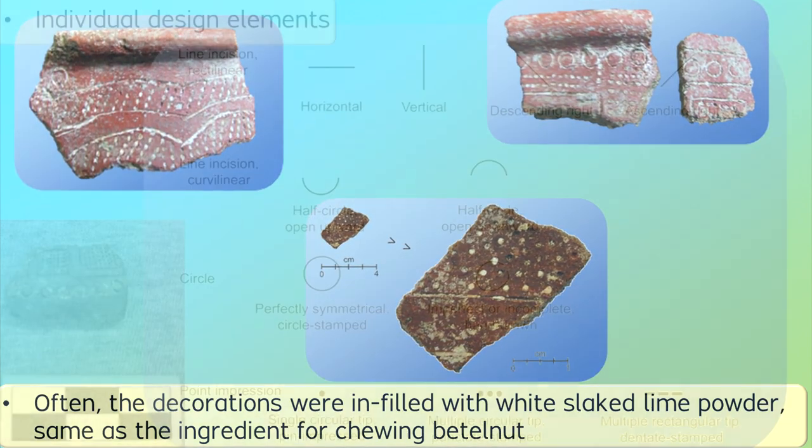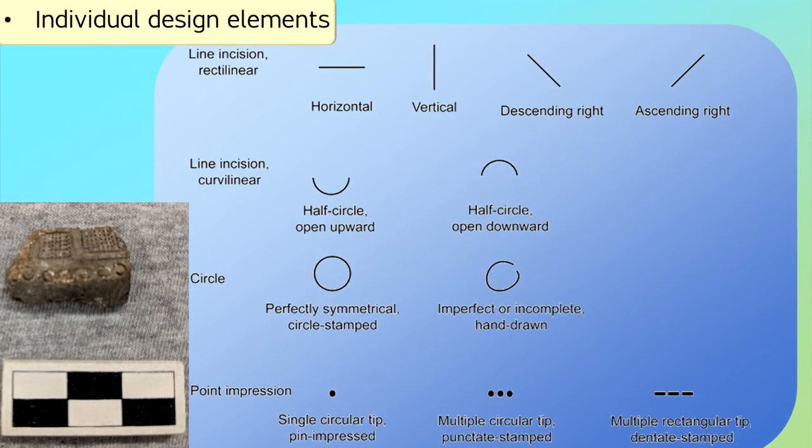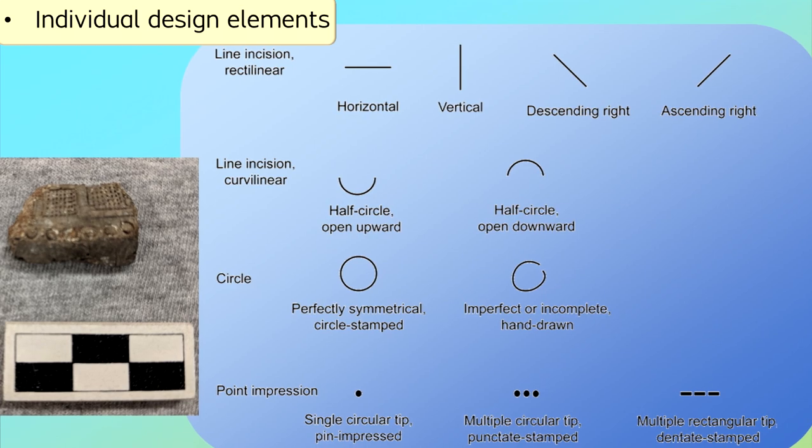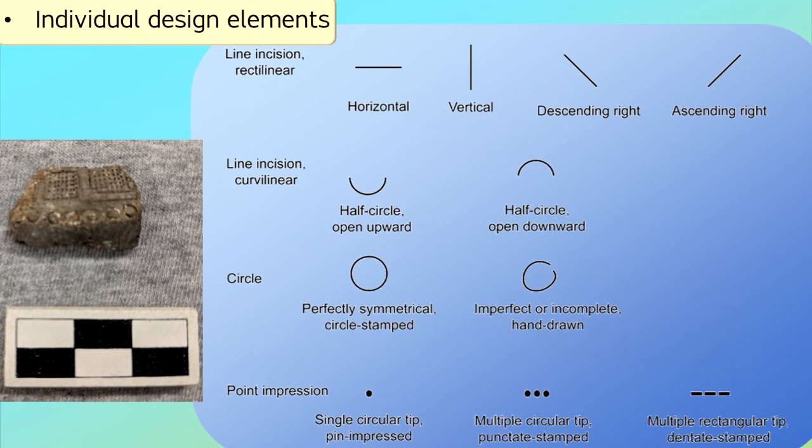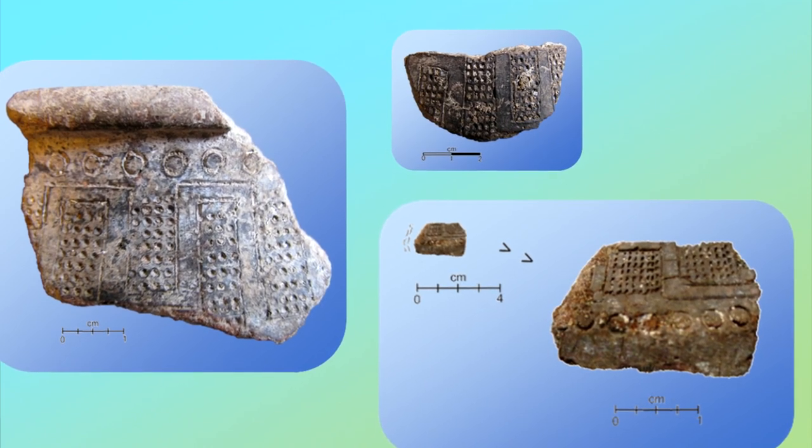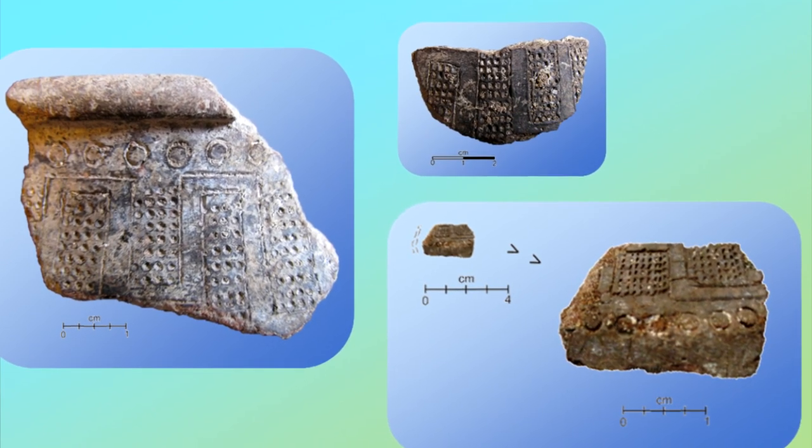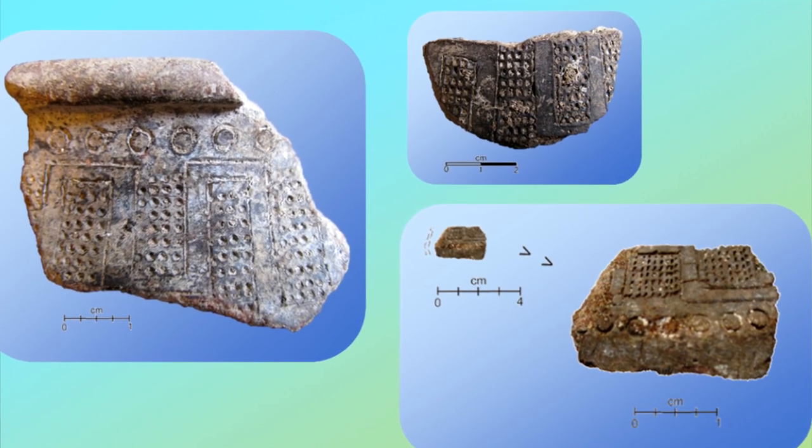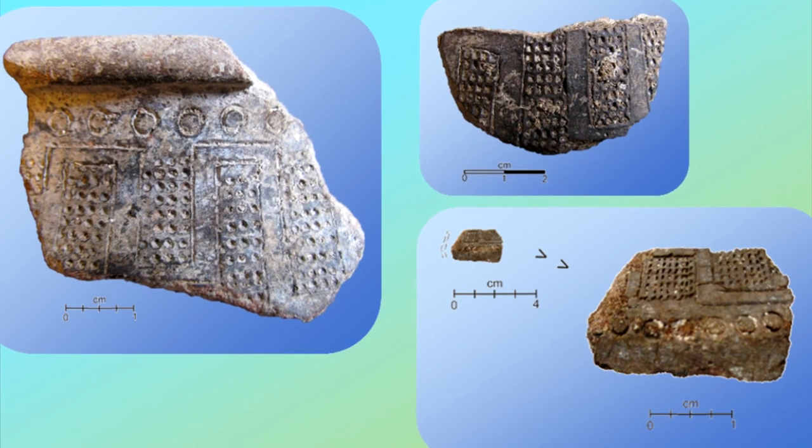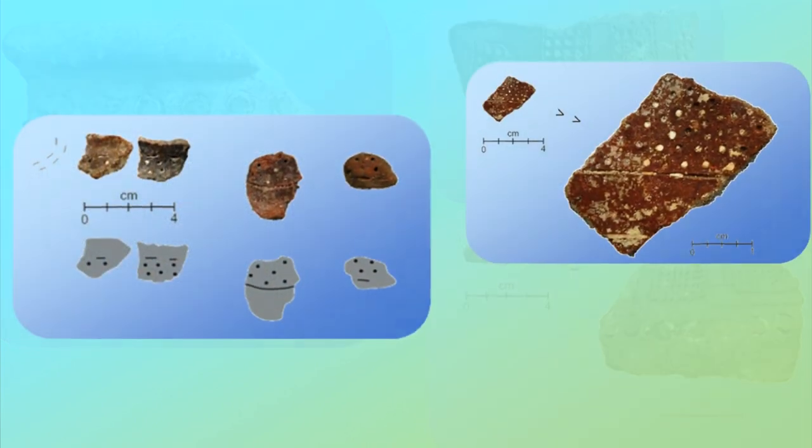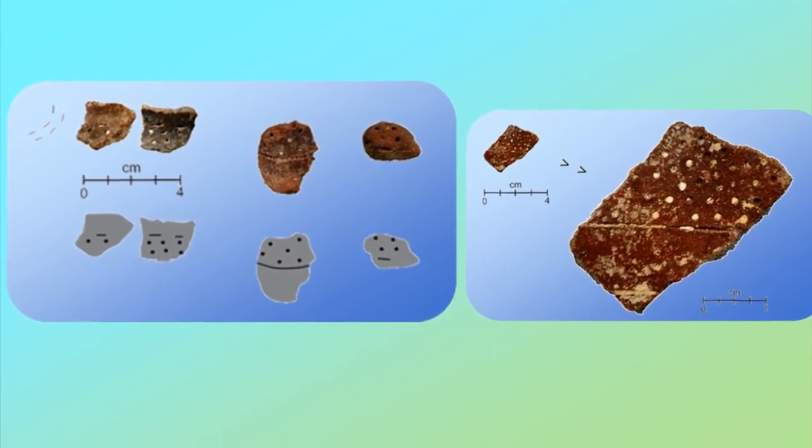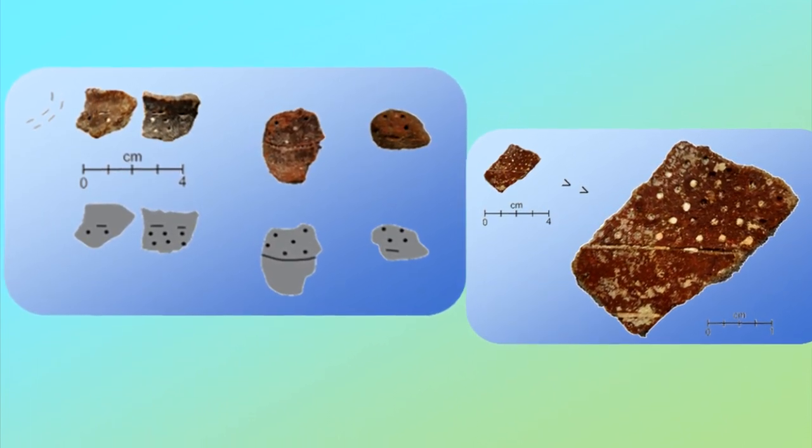The decorative techniques included dentate stamping, other point-tipped impressions, circle impressions, and fine line incisions. The dentate stamping was made with a comb-like tool, similar to a traditional tattooing needle. Close inspection can reveal the numbers of points in each comb, as well as the shapes of those points. Some of the point-tipped impressions resemble the use of a single pointed tool. Most likely, people used more than one pointed tool as part of a tool kit when decorating a bowl.